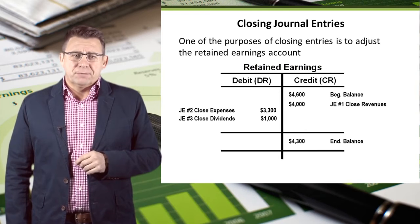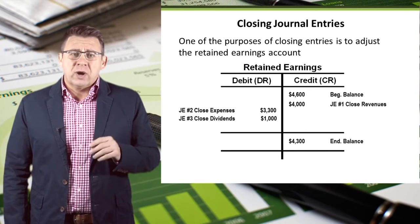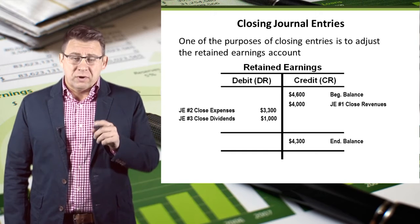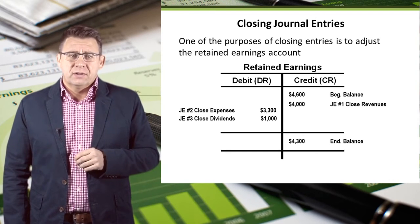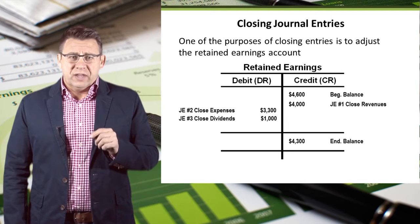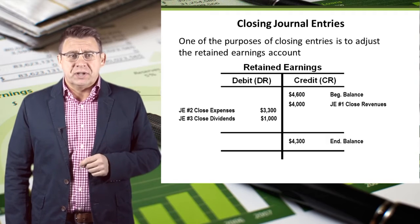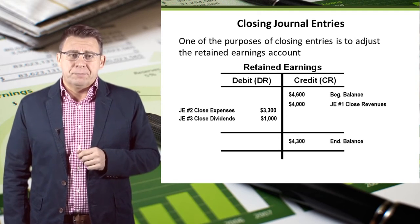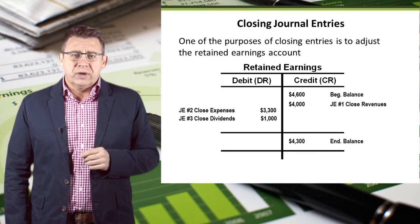Let's look at the retained earnings account. We started with a $4,600 credit balance, which came from the trial balance. We increased the account when we closed revenue — recall that revenues increase equity, and this journal entry is how that happens. We decreased the account when we closed expenses and dividends — recall that expenses and dividends decrease equity, and these are the journal entries that make that happen. Finally, we have an ending credit balance of $4,300.